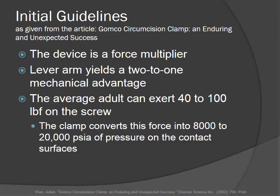The guidelines we use to reverse engineer the GOMCO clamp include: The device is a force multiplier. The lever arm yields a 2 to 1 mechanical advantage. The average adult can exert between 40 and 100 pounds force on the screw.